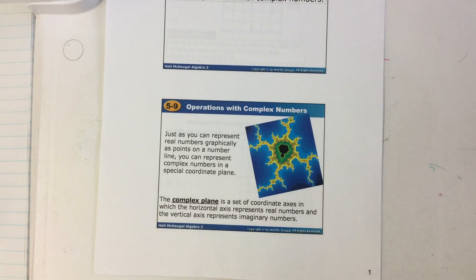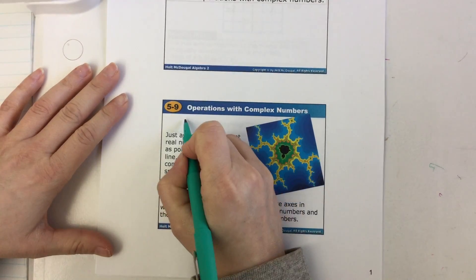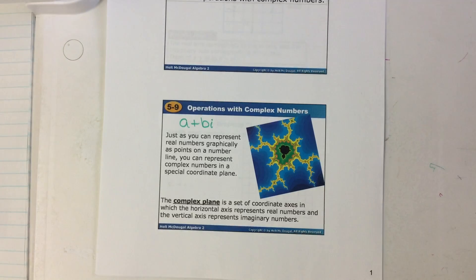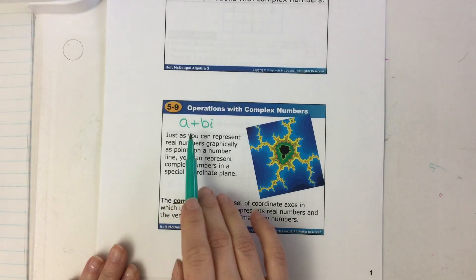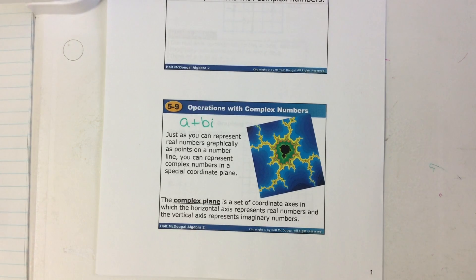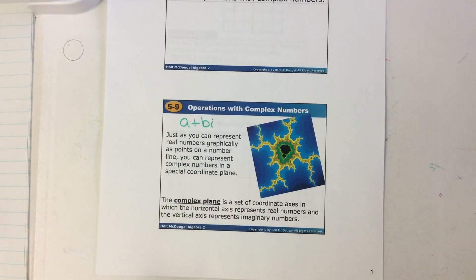Remember, now that we have imaginary numbers, if you have an imaginary number as well as a real number, you can write what's called a complex number and it's in the format A plus B·i. This can be a plus or a minus because when you add a negative value, that's the same thing as subtraction. The big thing you need to remember is that the real number comes before the imaginary.